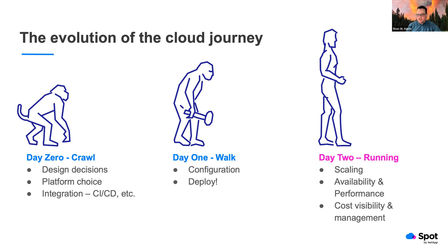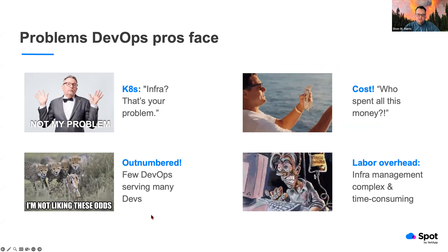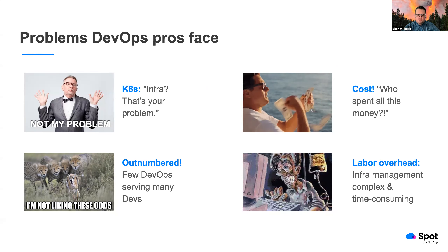The evolution of a cloud journey: Day zero is what I call the crawl phase — making your initial design decisions, your platform choice, how you're going to integrate, where you're going to land. Day one is your configuration and deploy, getting into the cloud. And now we're at day two: running. So you're talking about scaling, performance, availability, and then cost, visibility, and management. And a little understood curiosity of cloud consulting and optimization: